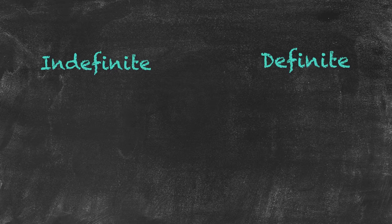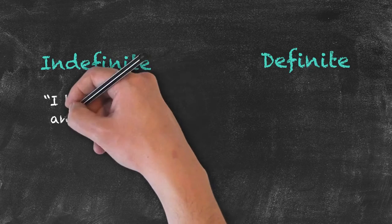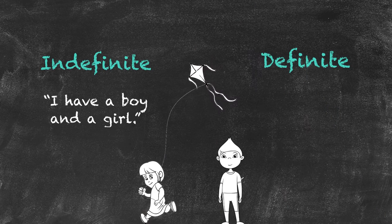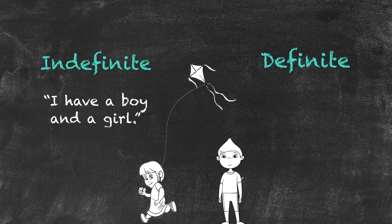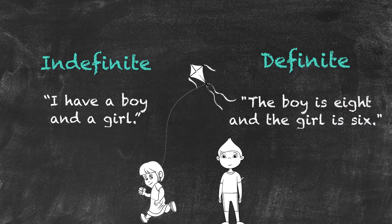We also use the indefinite article when mentioning something for the first time: 'I have a boy and a girl.' We use the definite article when mentioning that same thing an additional time or any additional times. So: 'I have a boy and a girl. The boy is 8 and the girl is 6.'